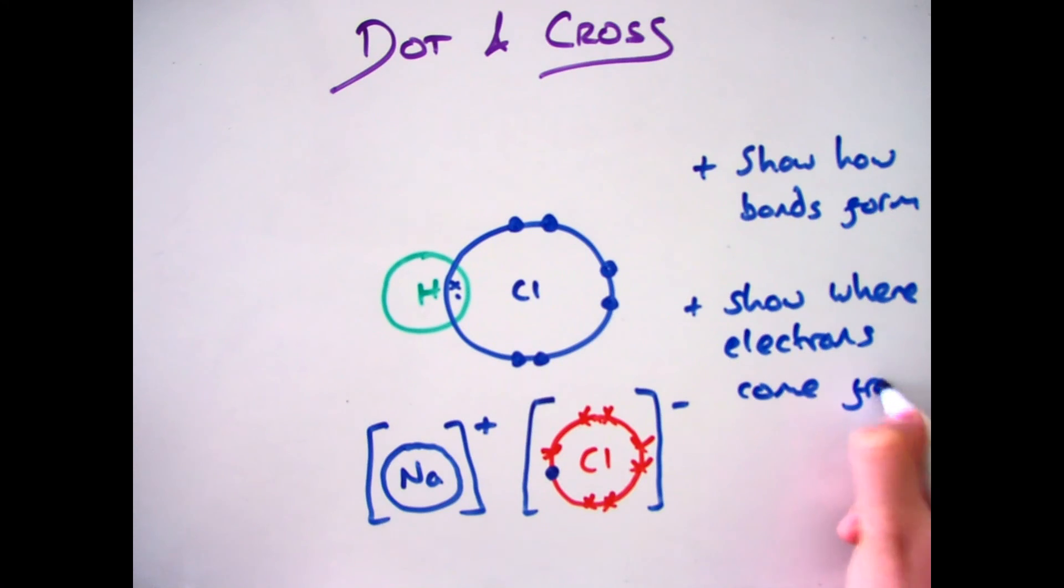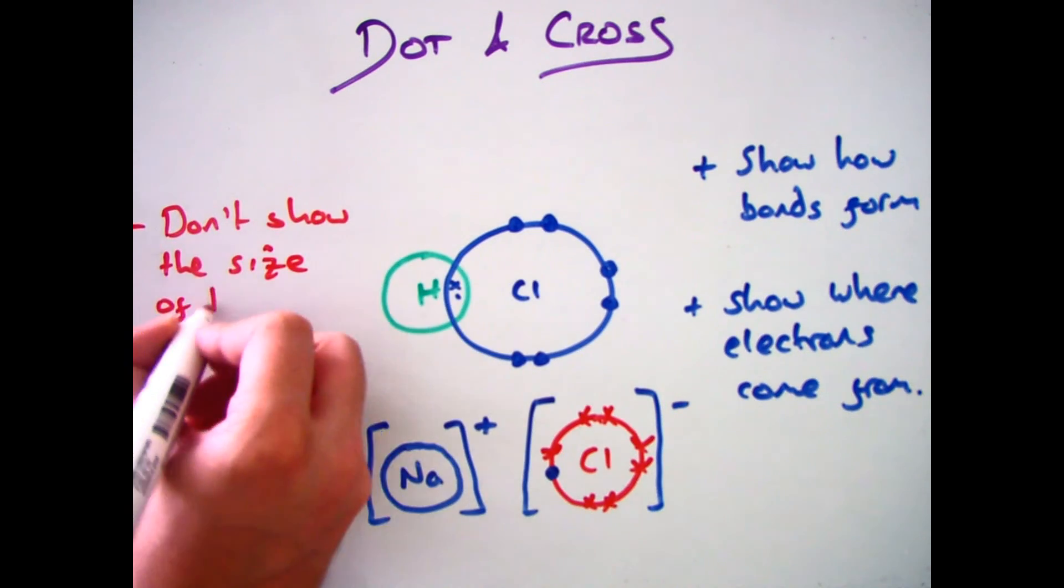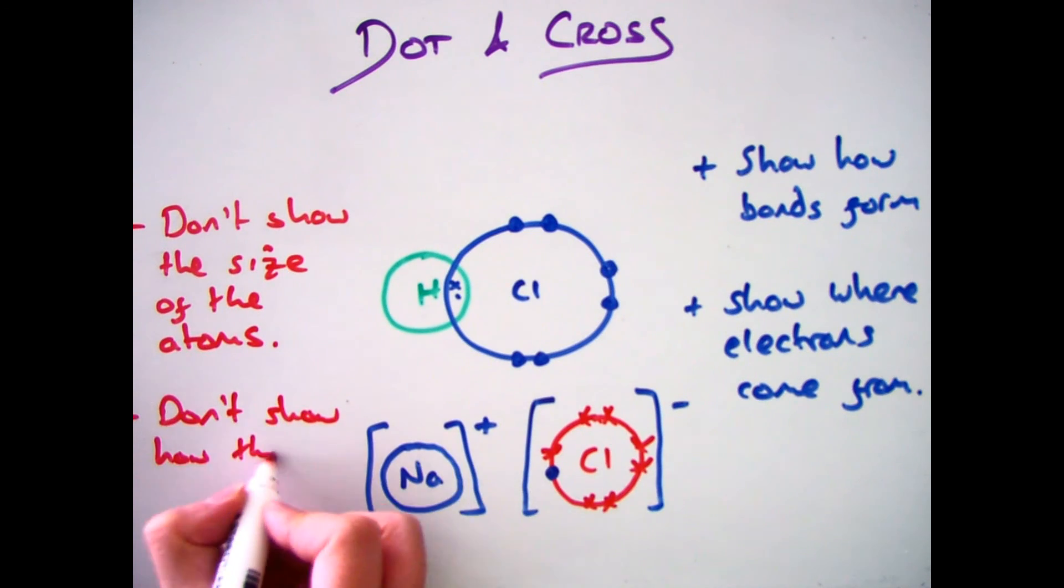It has a familiar negative though in that it doesn't actually show you the size of the compounds and it also doesn't actually show you how the atoms are arranged. So for example, it doesn't show you if it's a lattice structure.